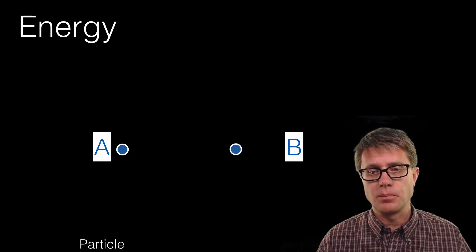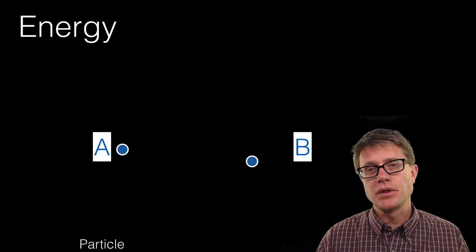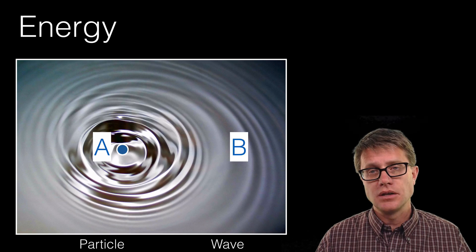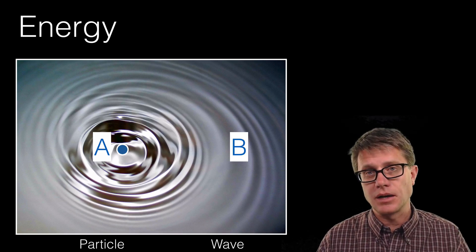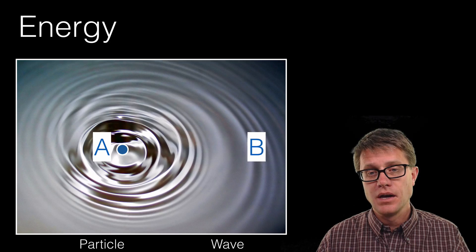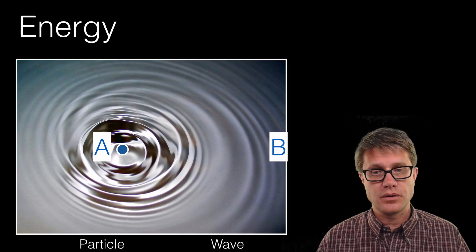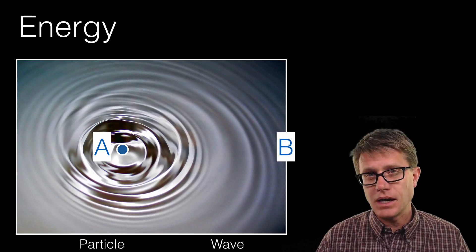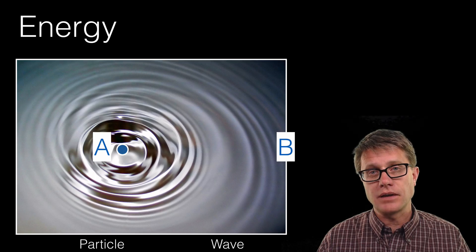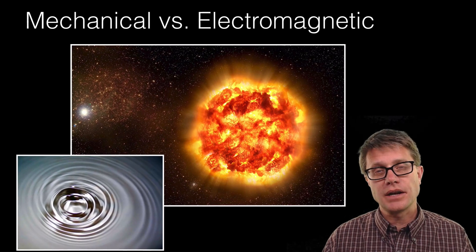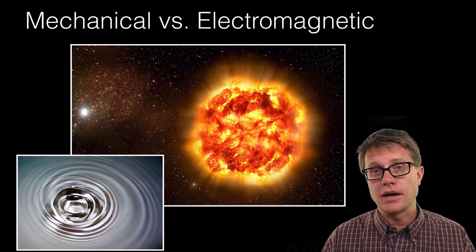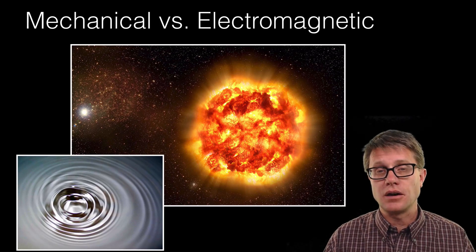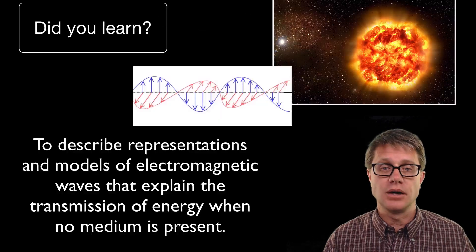Energy can move from point A to point B in two ways: it could move as a particle, or it can transfer through a wave by oscillating — for example, oscillating water back and forth to create waves. That would be a mechanical wave because you physically need a medium to transfer the energy. But electromagnetic waves are not mechanical — they can move through a medium like water, but they can also move through the vacuum of space.